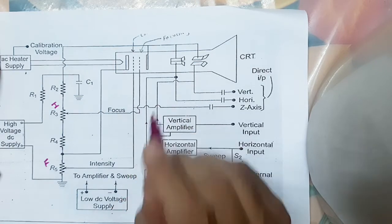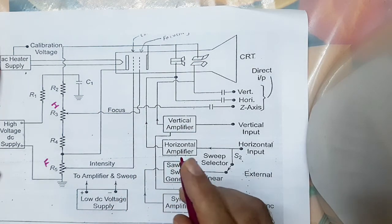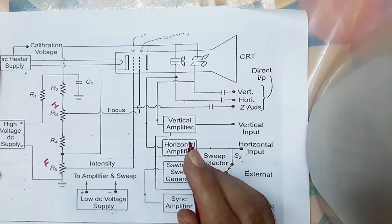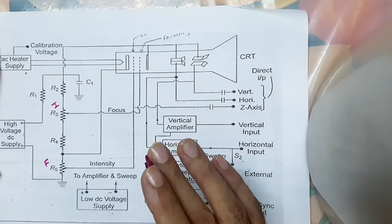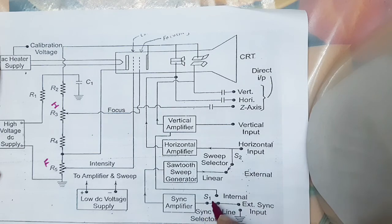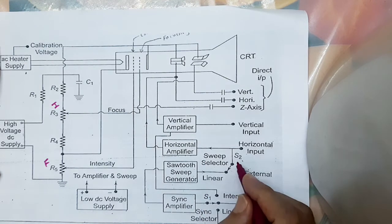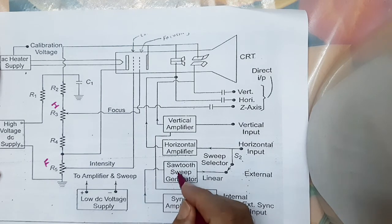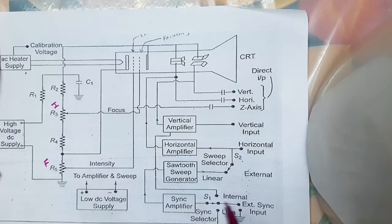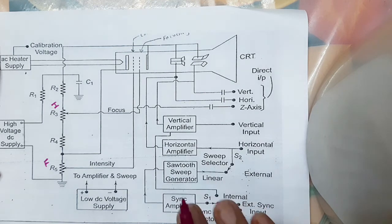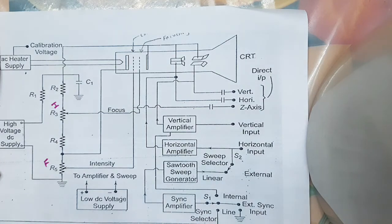Capacitor C1 is used to ground the deflection plates and the second anode for signal voltage, but DC isolates these electrodes from the ground. Normally, S2 is set to its linear position — this connects the sweep generator. S1 is connected to the sweep generator, meaning the sawtooth generator. Normally, we are applying sweep voltage — that means our sawtooth voltage — which gives us the x-axis on the screen of the CRO. Normally in CRO, we are mostly using sawtooth voltage.